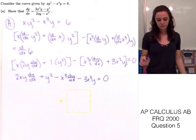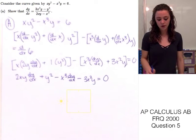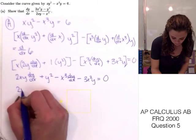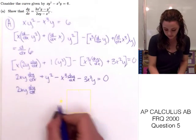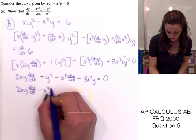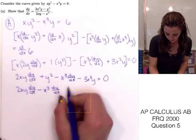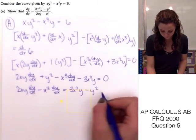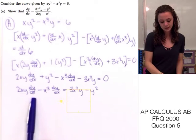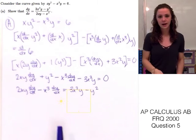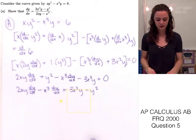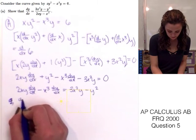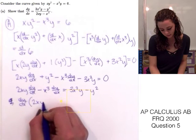Now that we've found the derivative of everything, we need to solve for dy/dx. We move everything without a dy/dx to the right side. So 2xy dy/dx minus x³ dy/dx stays on the left, and on the right side we'll have 3x²y minus y². Since both terms on the left are multiplied by dy/dx, we can factor it out.